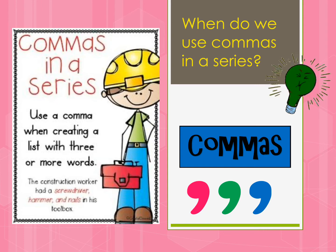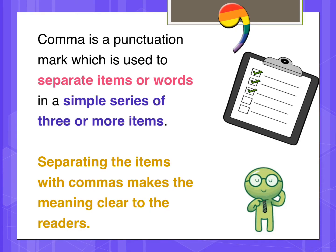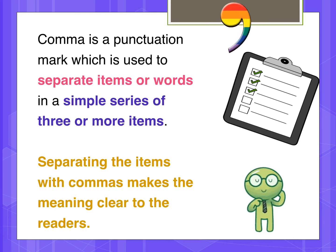I'm going to explain to you how we can use commas in a series. We will use them to create a list with three or more words. These words could be names or items. A comma is a punctuation mark which is used to separate items or words in a simple series of three or more items. Separating the items with commas makes the meaning clear to the readers.